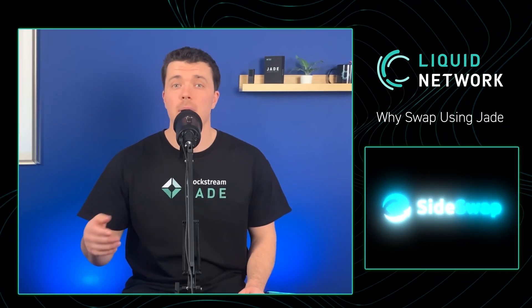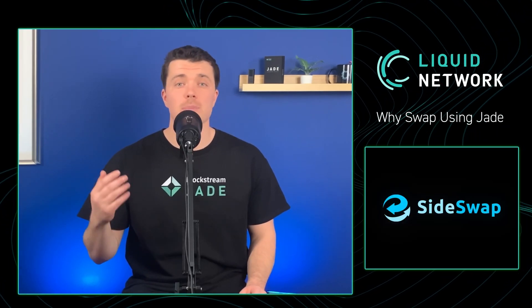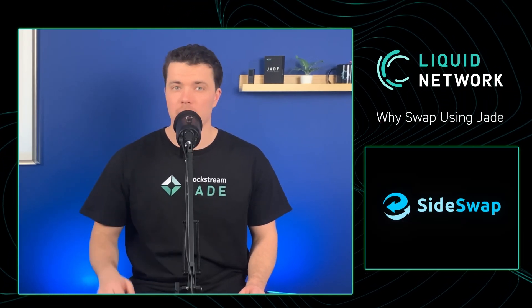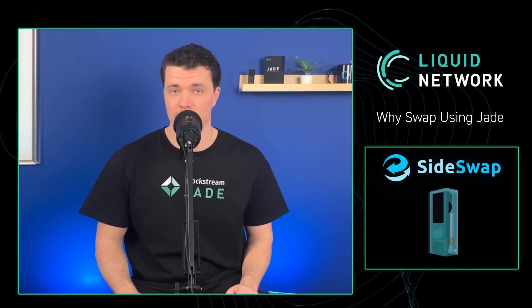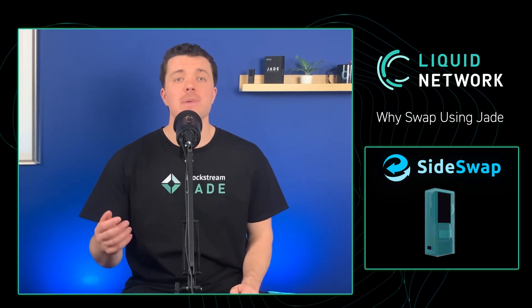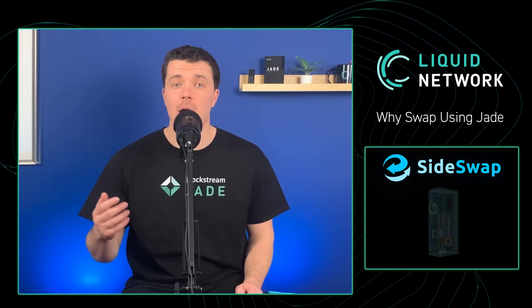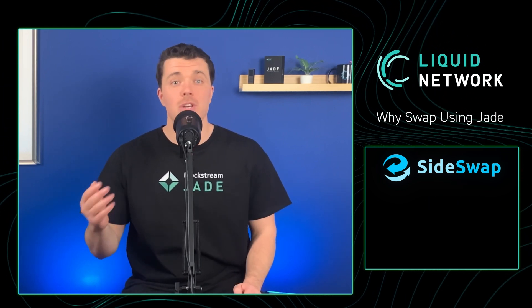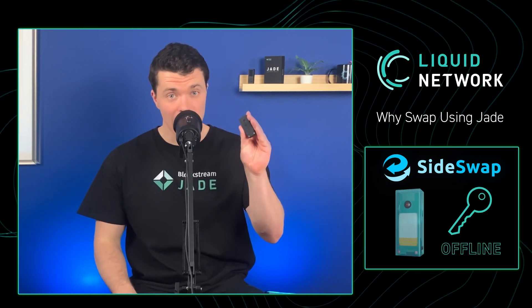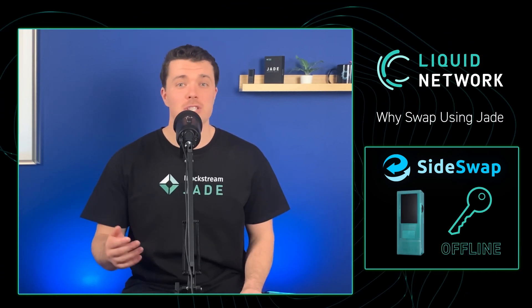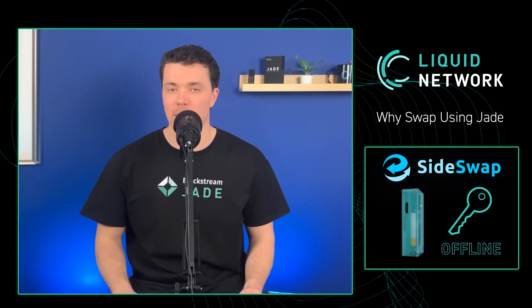A recent update to Sideswap allows users to place trustless limit and market orders directly from their Blockstream Jade hardware wallet on their platform. This means users are able to automatically swap Liquid Bitcoin for Liquid Tether and other Liquid assets, such as tokenized securities like the BMN, while keeping their keys offline using their Jade, saving on fees from exchanges, and assuring full custody through the entire swap process.